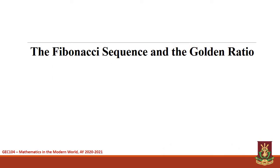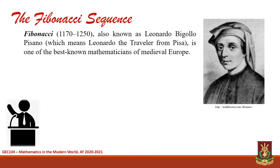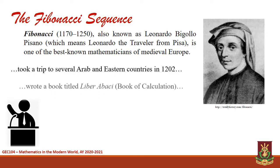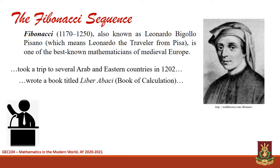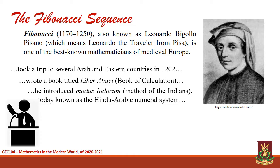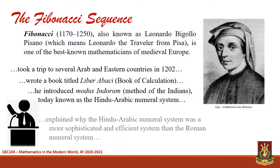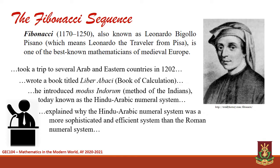Our lesson will start by introducing the Fibonacci sequence and the golden ratio. Fibonacci, also known as Leonardo Pisano, is one of the best-known mathematicians of medieval Europe. In 1202, after a trip that took him to several Arab and Eastern countries, Fibonacci wrote a book titled Liber Abasi, which means Book of Calculation. In the said book, he introduced Modus Indorum, today known as the Hindu-Arabic numeral system. He also explained why the said numeral system is more sophisticated and efficient compared to the Roman numerals.